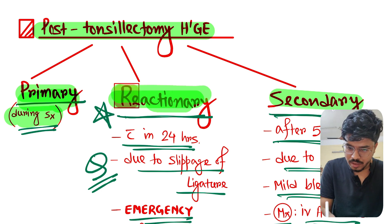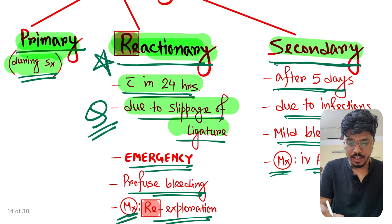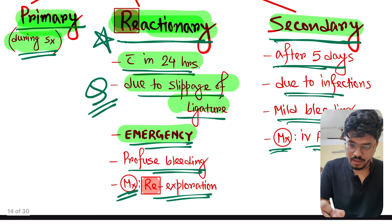Okay, so we can quickly revise it. Post-tonsillectomy hemorrhage: primary, reactionary, secondary. Primary hemorrhage means during surgery. Reactionary hemorrhage means within 24 hours due to slippage of ligature. It is an emergency condition. There is profuse bleeding and management is re-exploration.